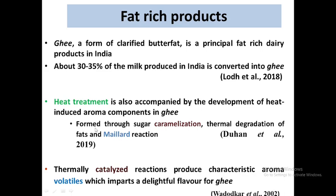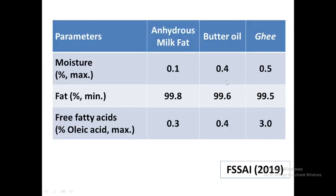In this video we will be learning about fat rich dairy products. These are ghee, butter oil, and anhydrous milk fat (AMF) — the three main fat rich dairy products. We will mainly be dealing with ghee. As per FSSAI standards, moisture content for AMF is 0.1%, butter oil 0.4%, and ghee 0.5%. The FFA limit for AMF is 0.3%, butter oil 0.4%, and ghee 3%.